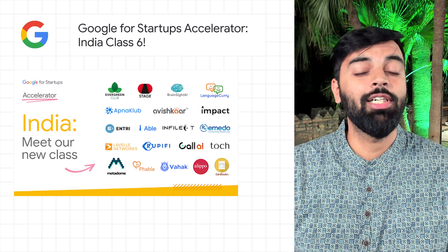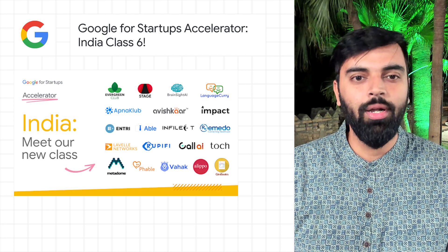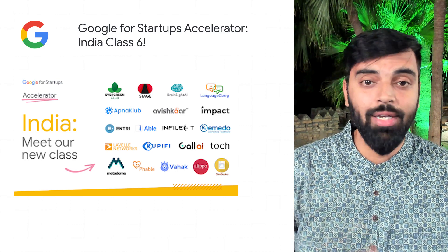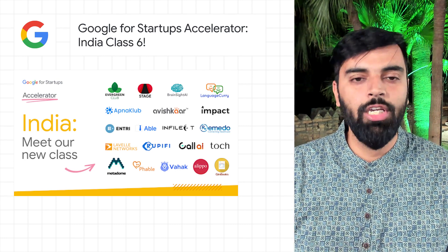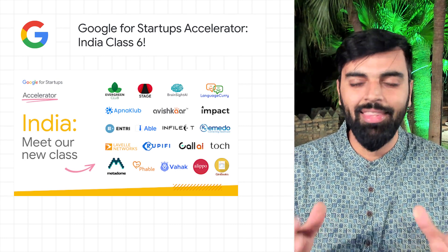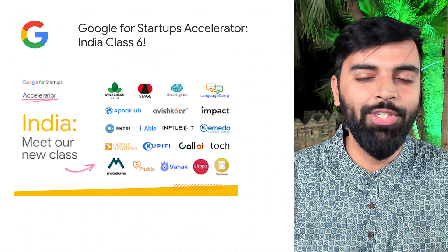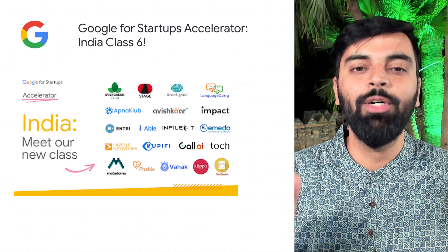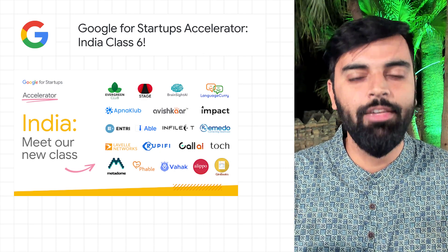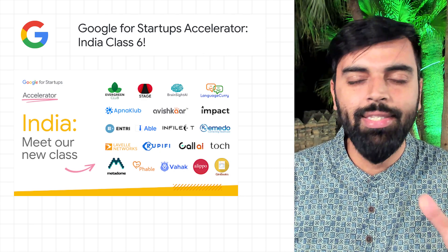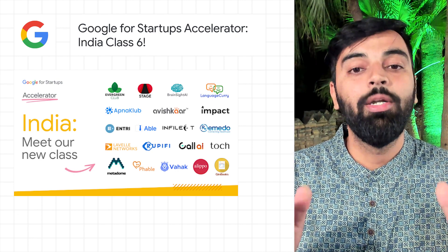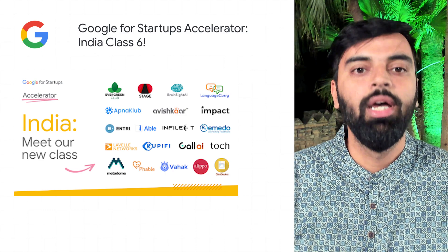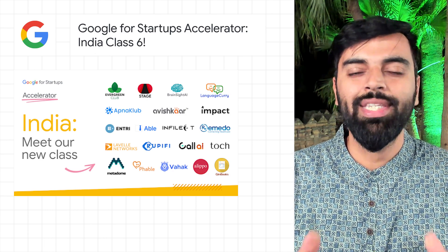India is home to the third largest startup ecosystem in the world, and the year 2021 saw several Indian unicorns successfully list on the Indian markets, signaling a coming-of-age for young technology companies in the country. We are pleased to announce the sixth class of Google for Startups Accelerator India with 20 startups, chosen from over 700 applicants through an intensive selection process. Learn more about these 20 startups joining us for the three-month program by visiting the blog post.